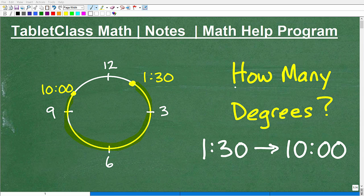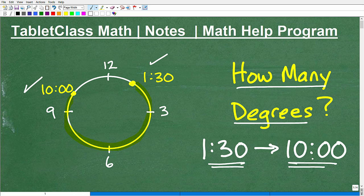Okay, let's go ahead and figure out how many degrees are from 1:30. Now this could be a.m. or p.m., it doesn't make a difference. So we're going to start at 1:30 and we're going to end at 10 o'clock. Of course, we're talking about a clock here, face of a clock.